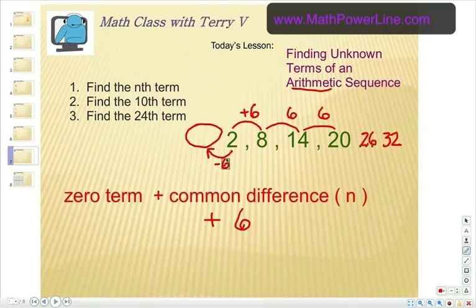Well, if you're going to subtract 6 from 2, what is that going to be? That's right, negative 4. So the zero term is negative 4.